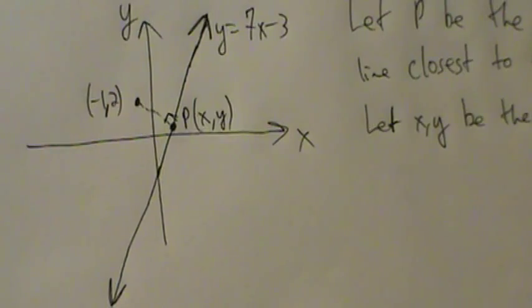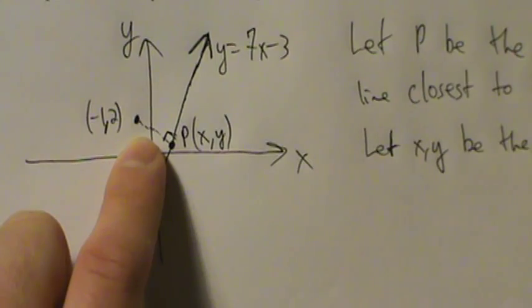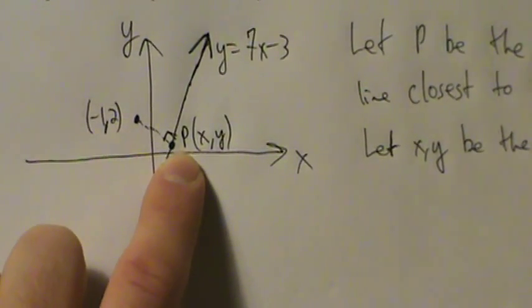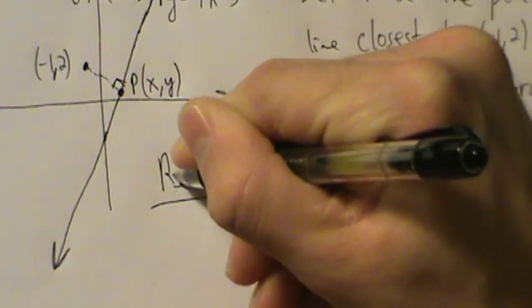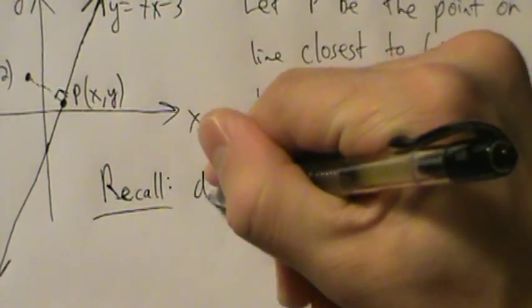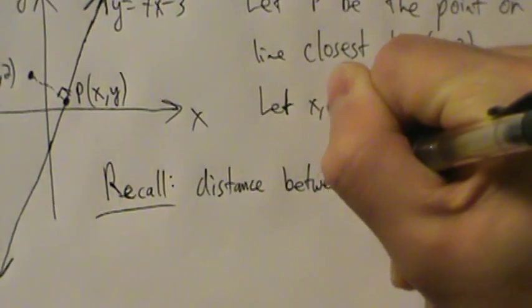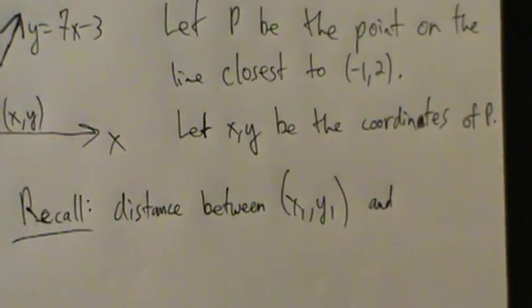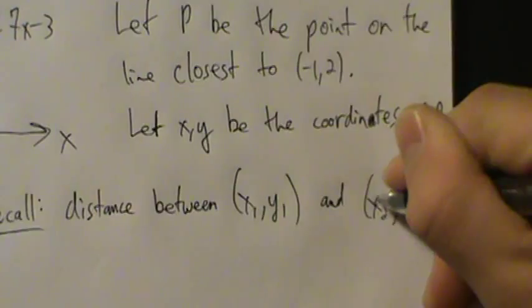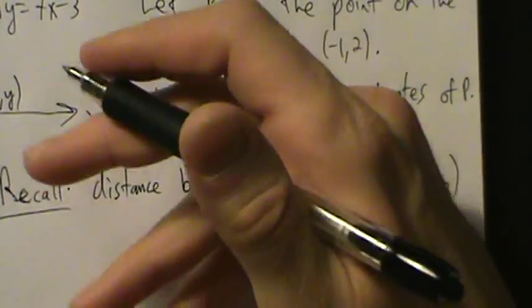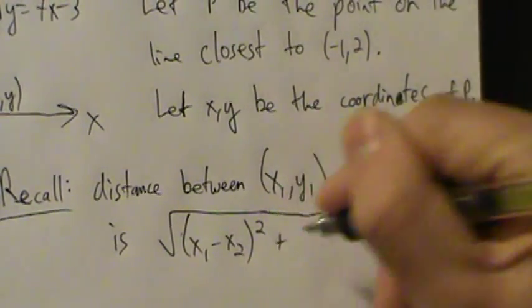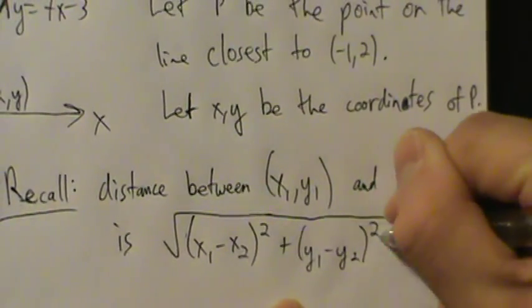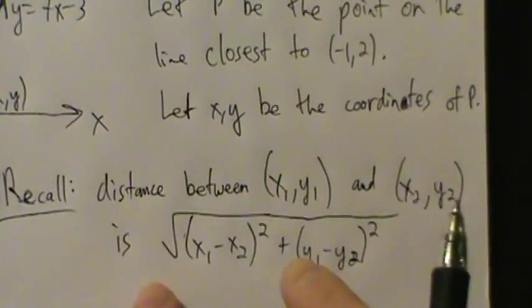That's step 1. Now step 2: write an equation for the quantity to be maximized or minimized. We want to find a point on this line that's closest to this point, so what we're really trying to do is minimize this distance — find point P such that the distance from P to this point is minimized. So remember the distance formula: the distance between two points x1, y1 and x2, y2 is the square root of (x1 minus x2) squared plus (y1 minus y2) squared.